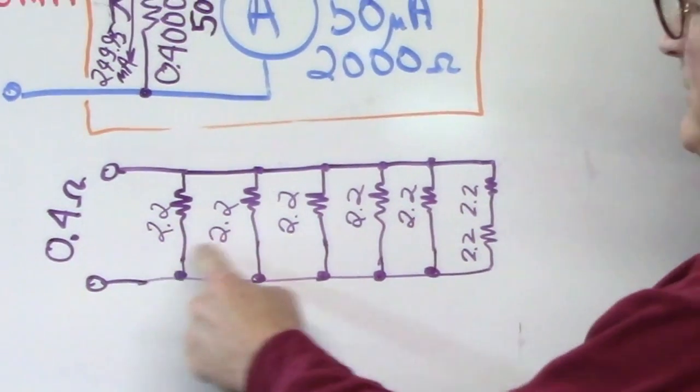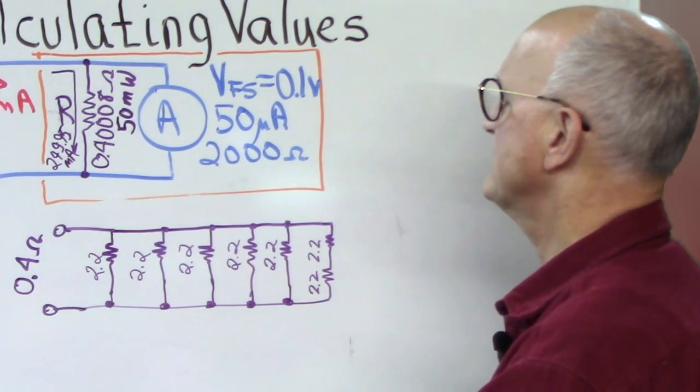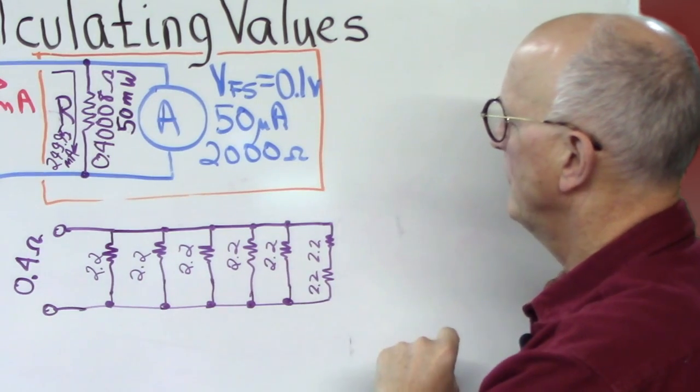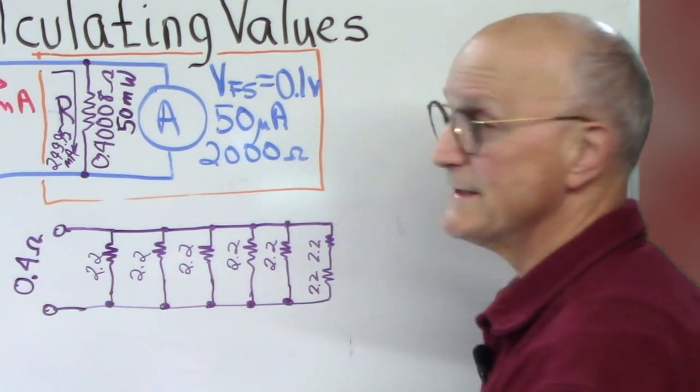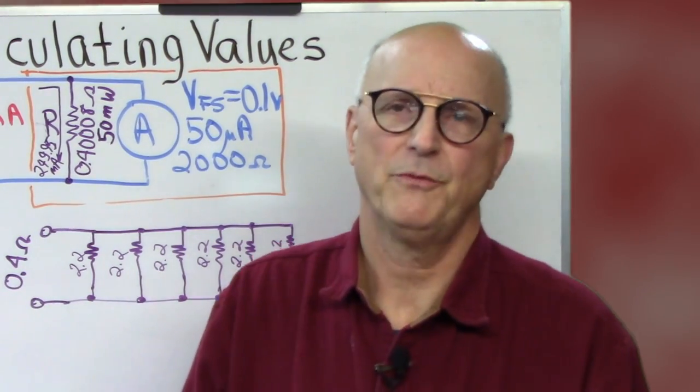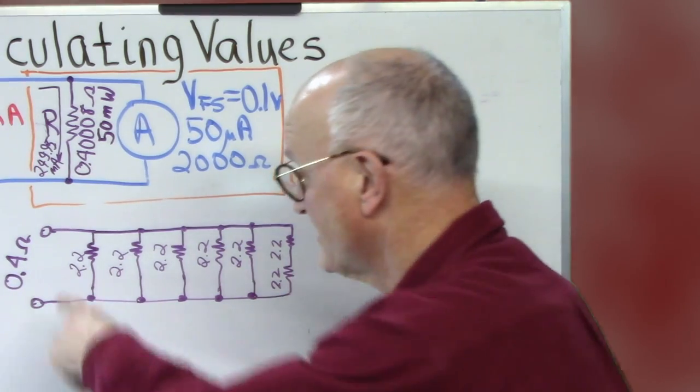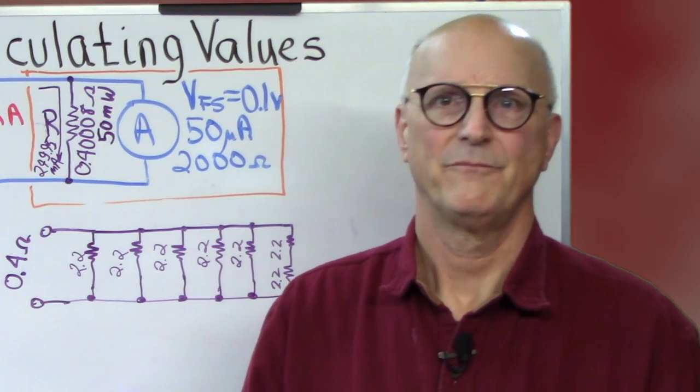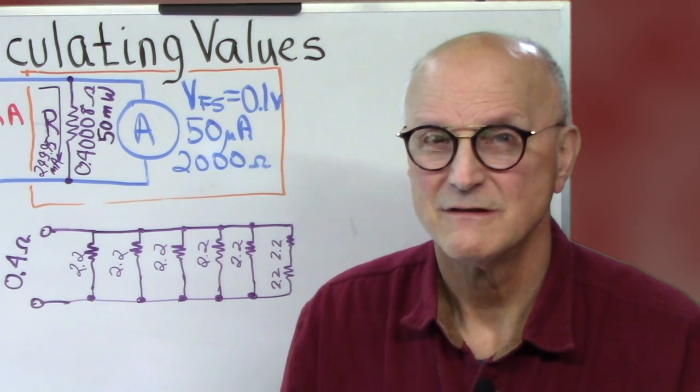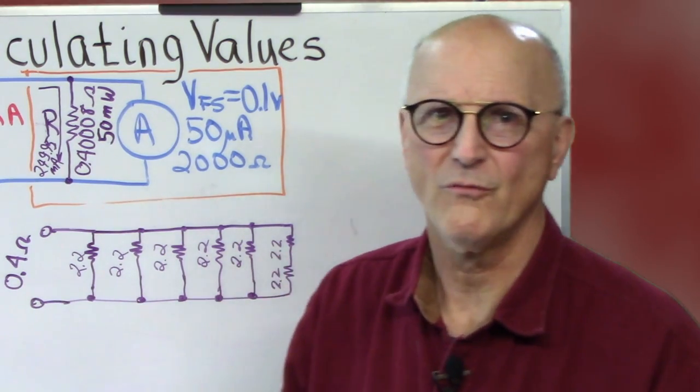I have 1, 2, 3, 4, 5, 2.2 ohm resistors in parallel. And then at the end, I have two 2.2 ohm resistors in series in parallel with the whole rest. And theoretically, ideally, with perfect 2.2 ohm resistors, this actually gives me exactly 0.4 ohms. But, these are 5% resistors.